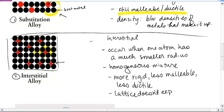but you are adding additional atoms into the space, typically what we find in interstitial alloys is the overall density increases.